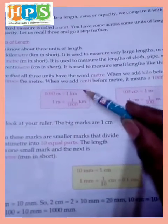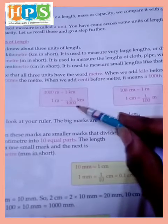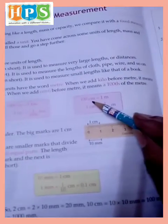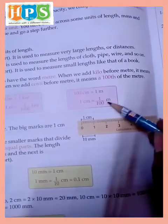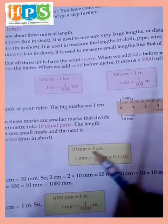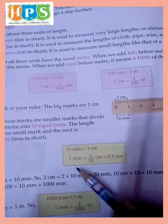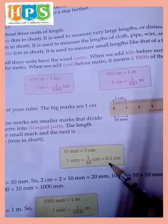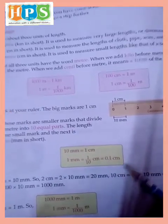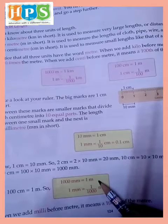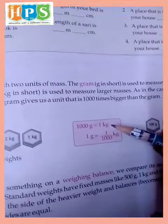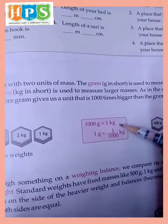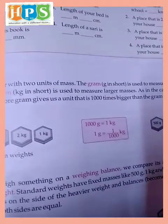1000 meter is equal to 1 kilometer. 1 meter is equal to 1 upon 1000 kilometer. 100 centimeter is equal to 1 meter. 1 centimeter is equal to 1 upon 100 meter. 10 millimeter is equal to 1 centimeter, and 1 millimeter is equal to 1 upon 10 centimeter or 0.1 centimeter. 1000 millimeter is equal to 1 meter, and 1 millimeter is equal to 1 upon 1000 meter. 1000 gram is equal to 1 kilogram, and 1 gram is equal to 1 upon 1000 kilogram.